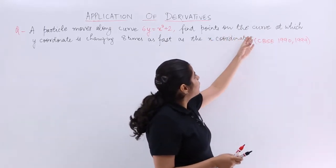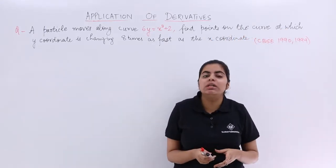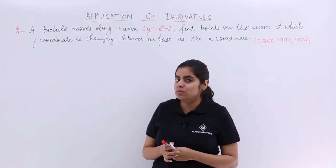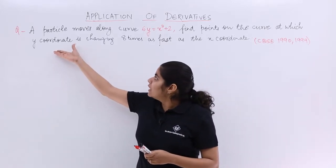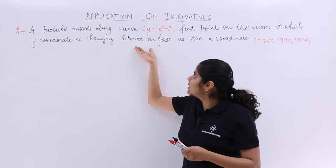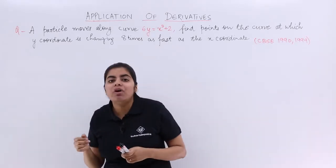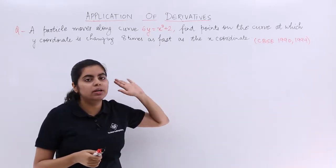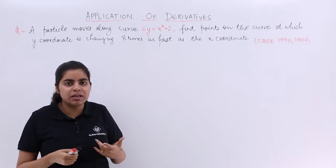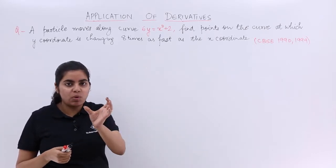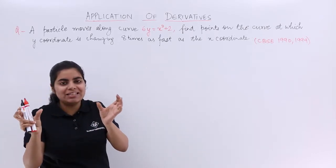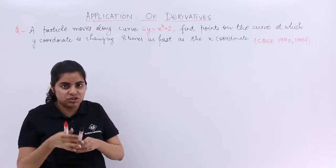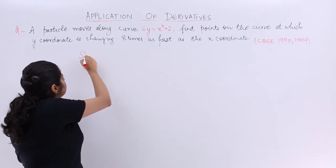Now it says find the points on the curve—on that curve 6y equals x cubed plus 2—wherein y coordinate is changing 8 times as fast as x coordinate. So this wording is very important to understand. Y coordinate changing 8 times as fast. Let's write the solution and let me make you understand.